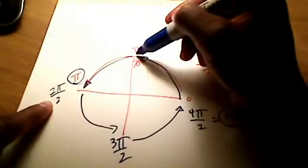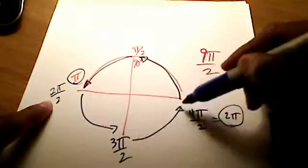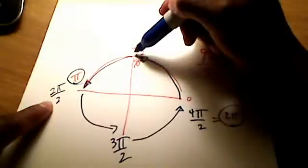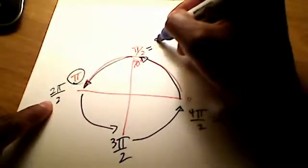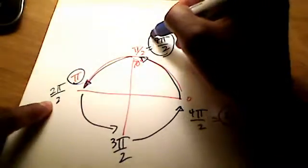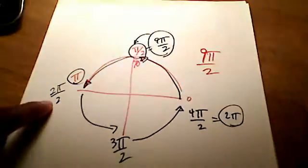This is 5π, 6π over 2, 7π over 2, 8π over 2, 9π over 2. Oh, so 9π over 2 is really the exact same radian as π over 2.